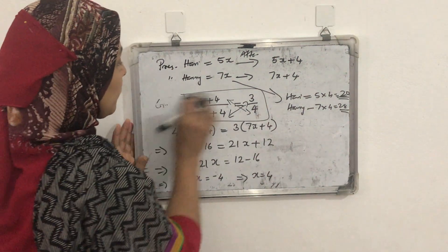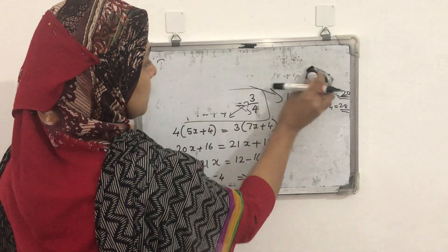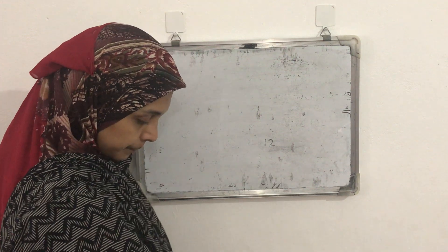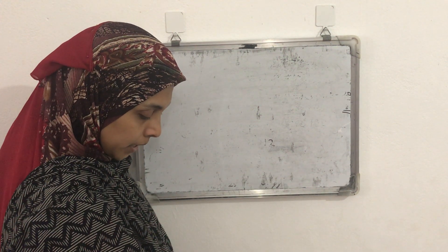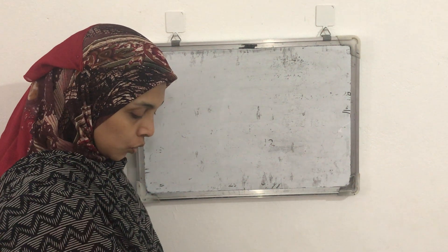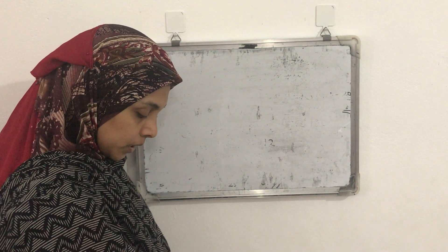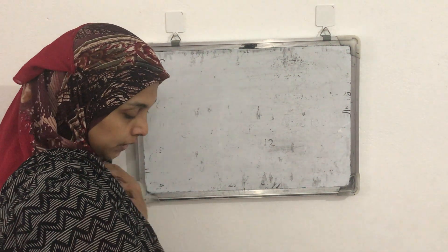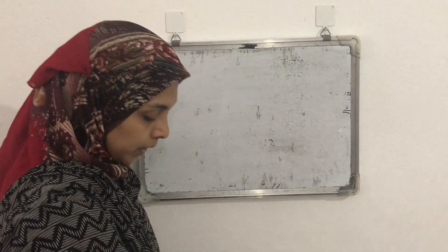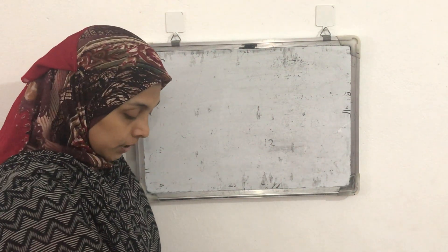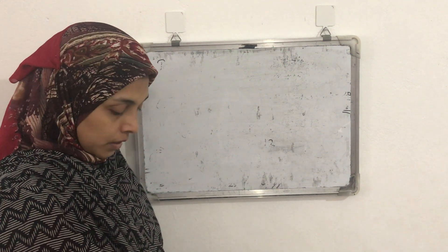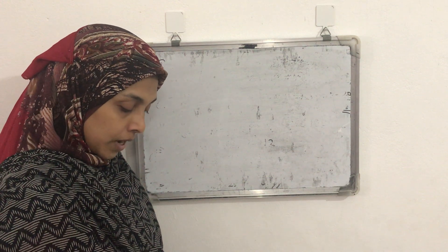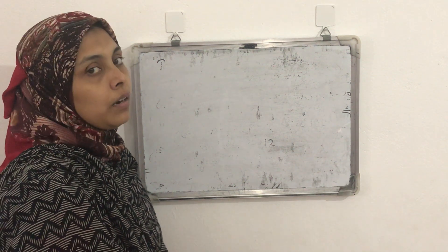Then next question — question number 7. The denominator of a rational number is greater than its numerator by 8. If the numerator is increased by 17 and the denominator is decreased by 1, the number obtained is 3/2. Find the rational number. Here it is discussed about a rational number, and the denominator is related to the numerator.